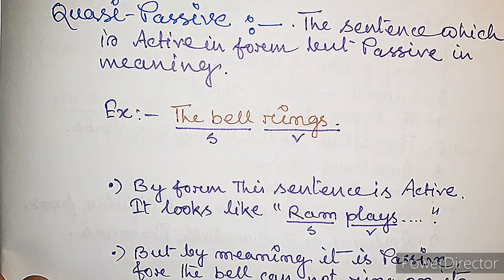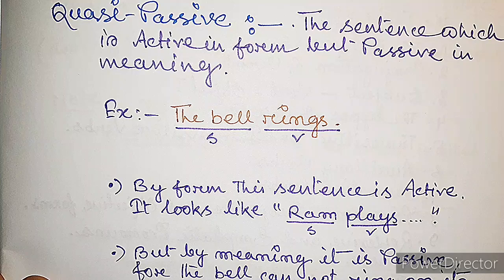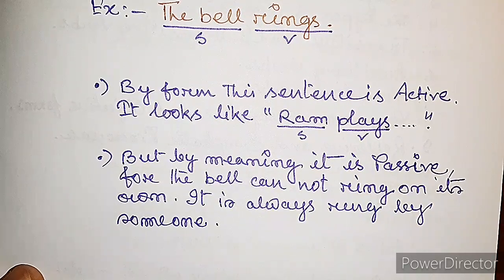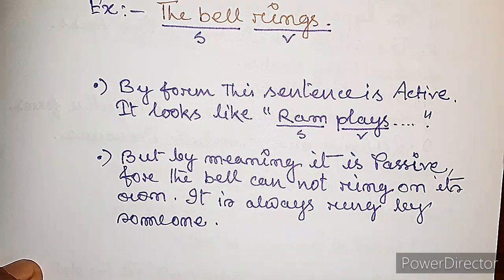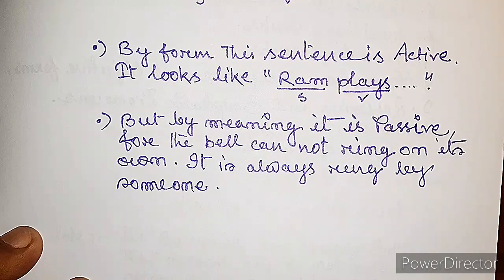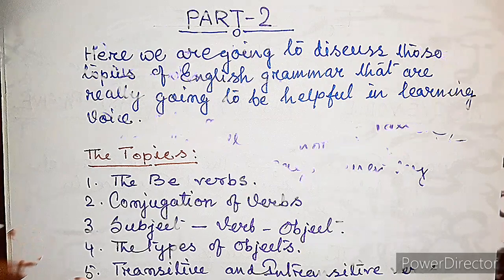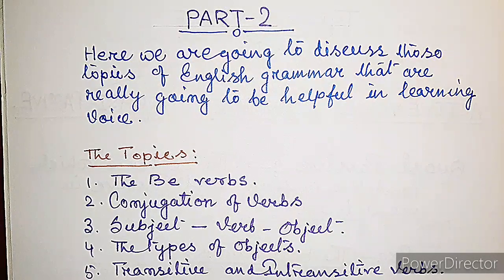The bell is the subject and 'rings' is its verb. The form of the verb agrees with the subject — it is in third person singular number, that's why the verb takes -s with it. So in form this sentence is totally active. By form this sentence is active, it looks like active voice, but by meaning it is passive, for the bell cannot ring on its own — it is always rung by someone else.